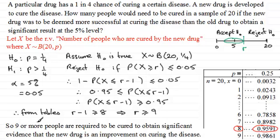So 9 or more people are required to be cured to obtain significant evidence that the new drug is an improvement on curing the disease. Okay well I hope this example has given you some idea how we can go about handling this type of problem.